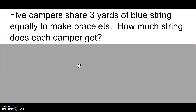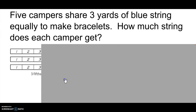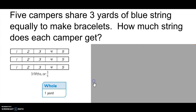Five campers share three yards of blue string equally to make bracelets. How much string does each camper get? Pause the video to solve. I drew the three yards of blue string as three rectangles and divided them into five equal parts for the five campers. Each camper would get three fifths. Camper 1 gets this fifth, this fifth, and this fifth — three fifths. Camper 2 gets this fifth, this fifth, and this fifth — three fifths.